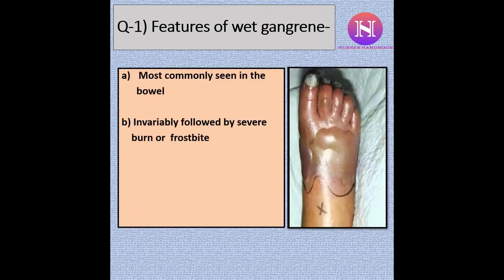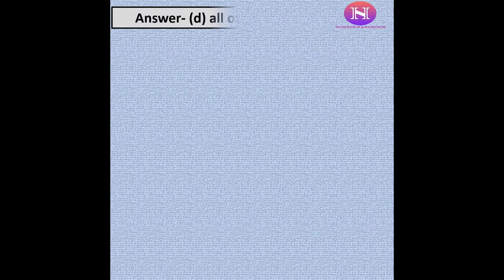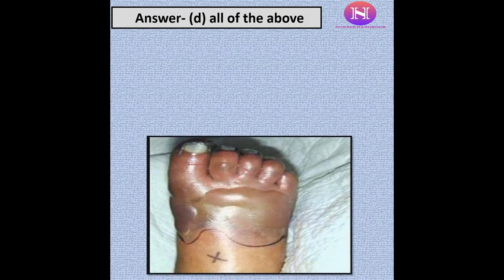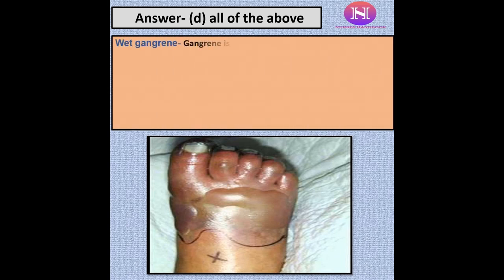Options: a. Most commonly seen in the bowel. b. Invariably followed by severe burn or frostbite. c. Venous obstruction is there. d. All of the above. The correct answer is d. All of the above. Gangrene is referred to as wet when there is a bacterial infection in the affected tissue.